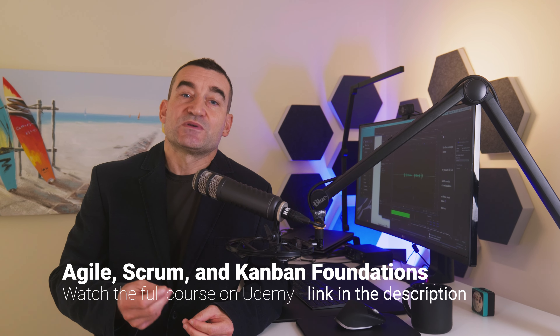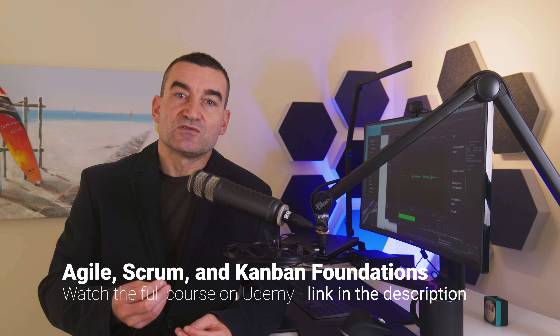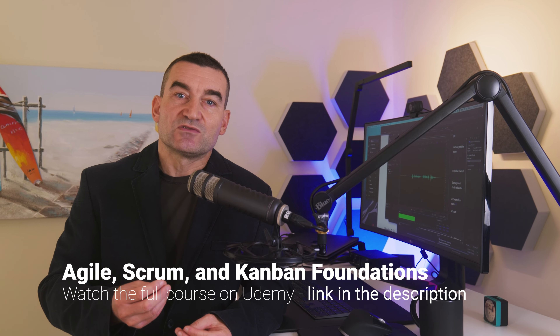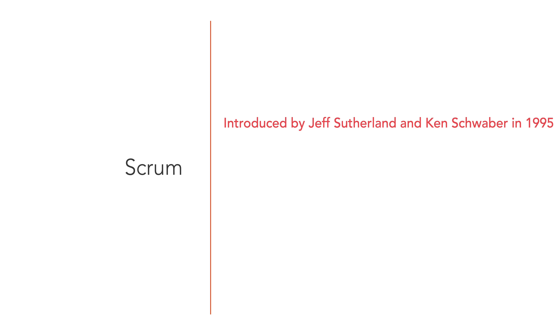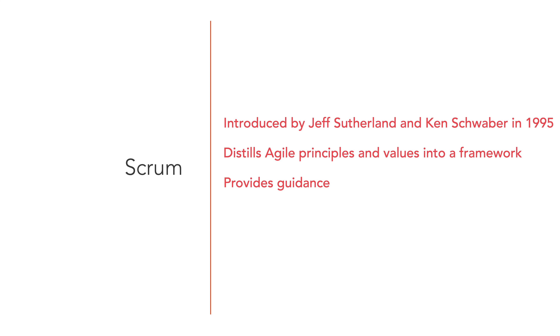So far, we've talked about the principles and values of Agile. While these principles and values are essential, they cannot be directly translated into a concrete methodology. This is where Scrum comes in. The term Scrum was first introduced by Jeff Sutherland and Ken Schwaber in 1995. Scrum takes the values and the principles defined in the Agile manifesto and distills them into a simple-to-follow framework. Scrum provides general guidance for managing complex product development, but it does not define detailed actions. Instead, it focuses on a team-driven, empirical process.